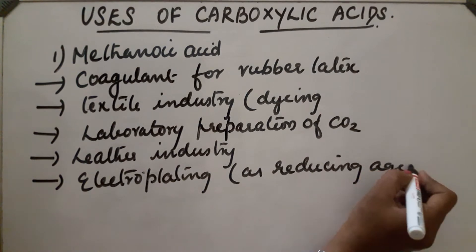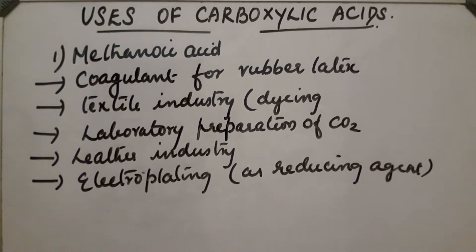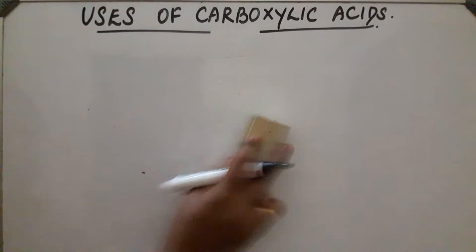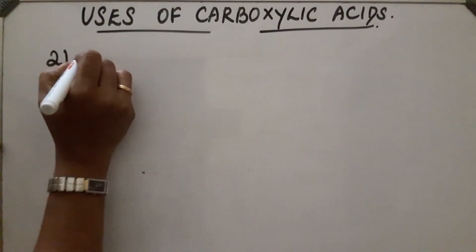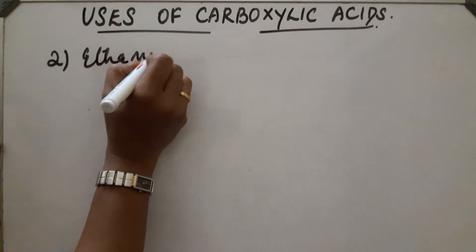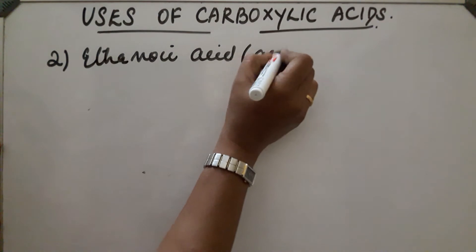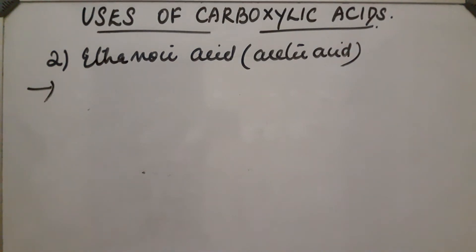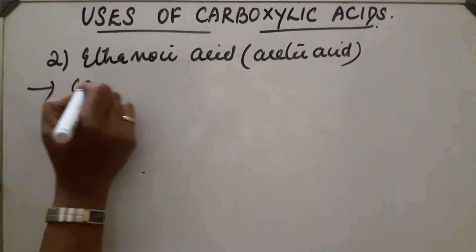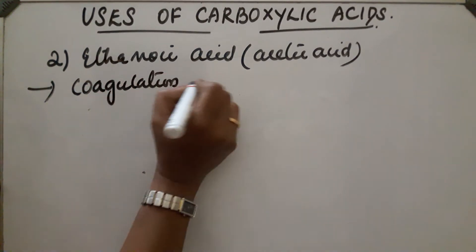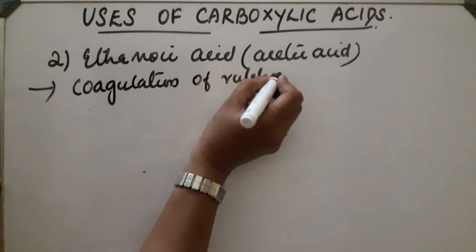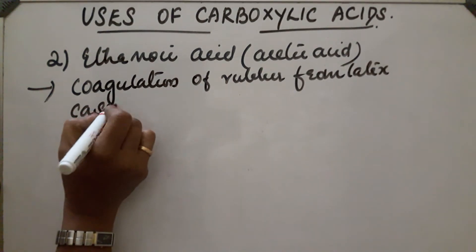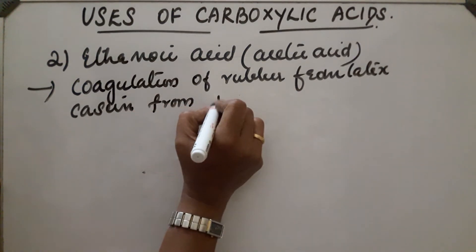These are the different uses of methanoic acid. The second one is ethanoic acid or acetic acid. It is used in the coagulation of rubber from latex and coagulation of casein from milk.